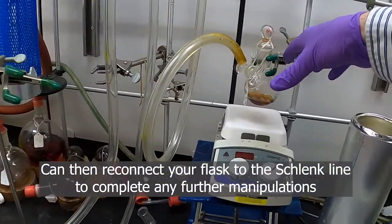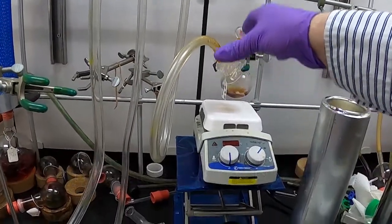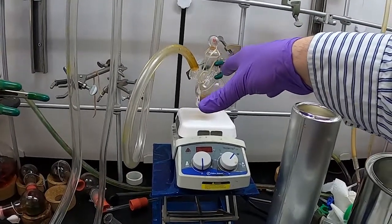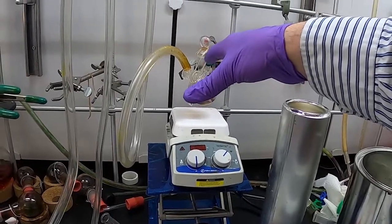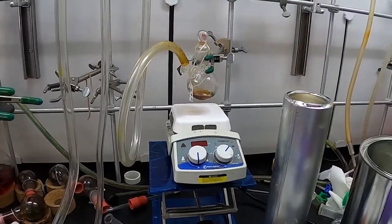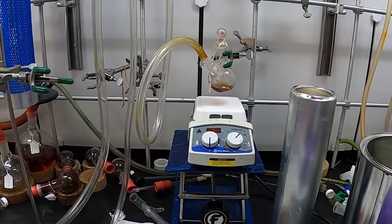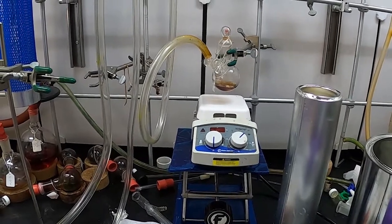If you want to put a septum on here for further manipulations, or if you're ready to take this into the glove box, make sure it's under vacuum. If you want to continue drying, you can do drying on the Schlenk line, and then make sure you're under nitrogen or vacuum if you're going to bring it into a glove box for any further manipulations. That's how to use an external trap to remove solvent on the Schlenk line. Please see other videos by Chem410. Thank you.